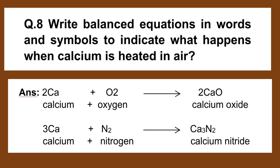Number 8. Write balanced equations in words and symbols to indicate what happens when calcium is heated in: A) oxygen, B) nitrogen. 2Ca plus O2 gives 2CaO (calcium oxide). Ca plus N2 gives Ca3N2 (calcium nitride).